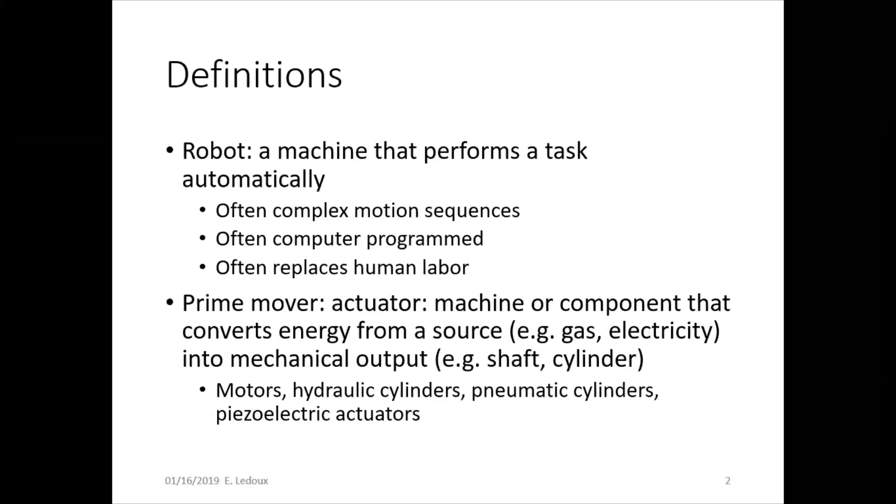A robot is a machine that performs a task automatically. Usually it has complex motion sequences and is computer programmed and can replace human labor. Robots are great for very repetitive tasks that require precision or very heavy lifting, things that don't take a lot of cognitive effort but need to be repeatable and the same every time.